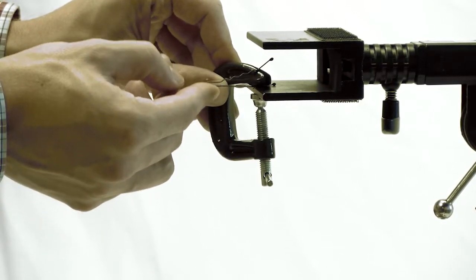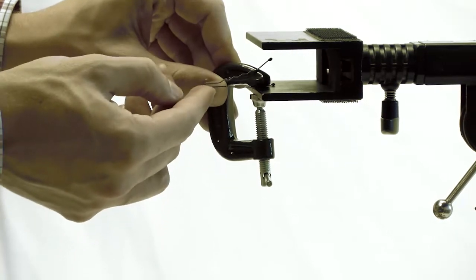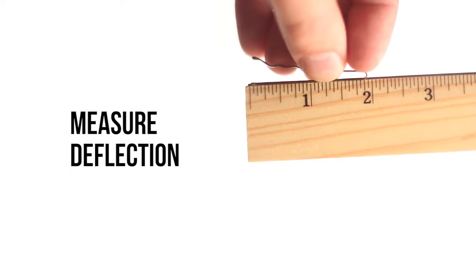Bend the control bobby pin back to its original position to remove the permanent deflection. The control bobby pin should return to its original position.